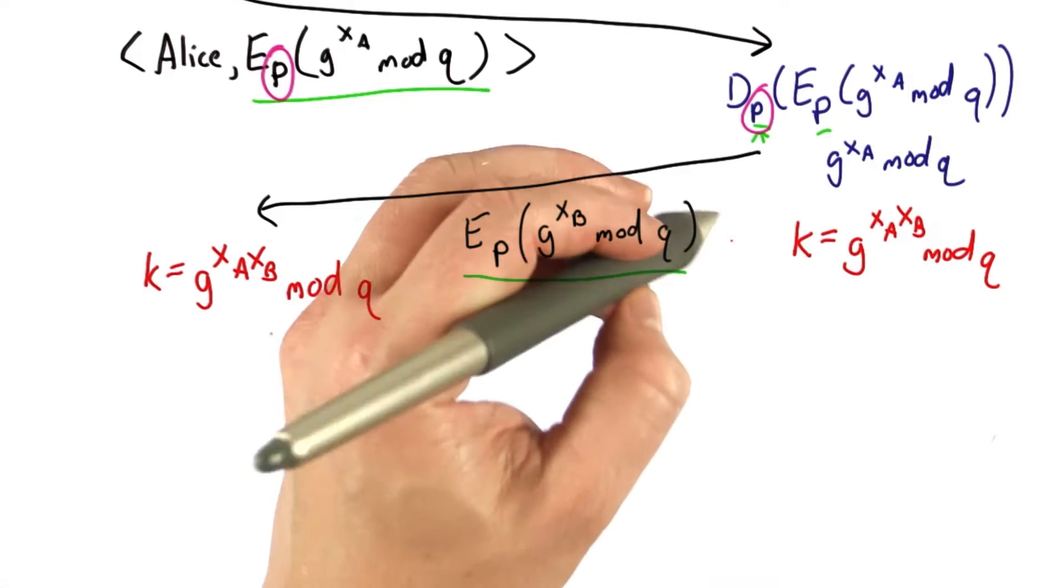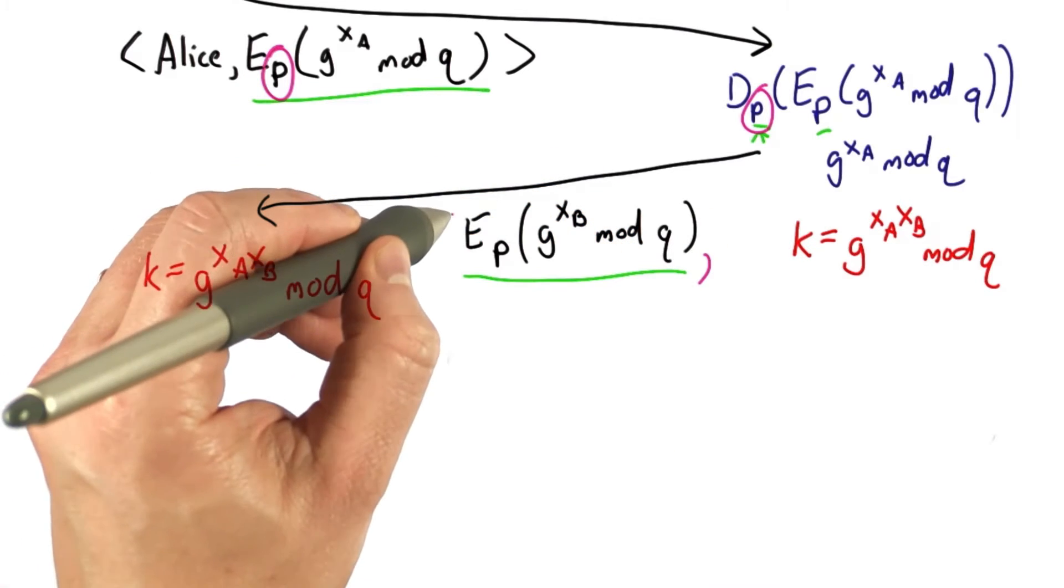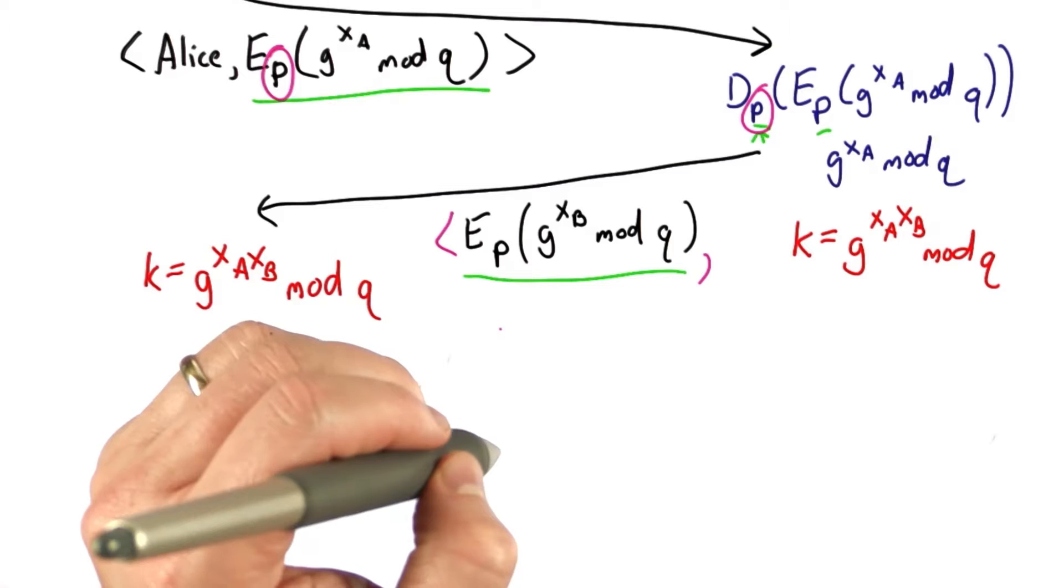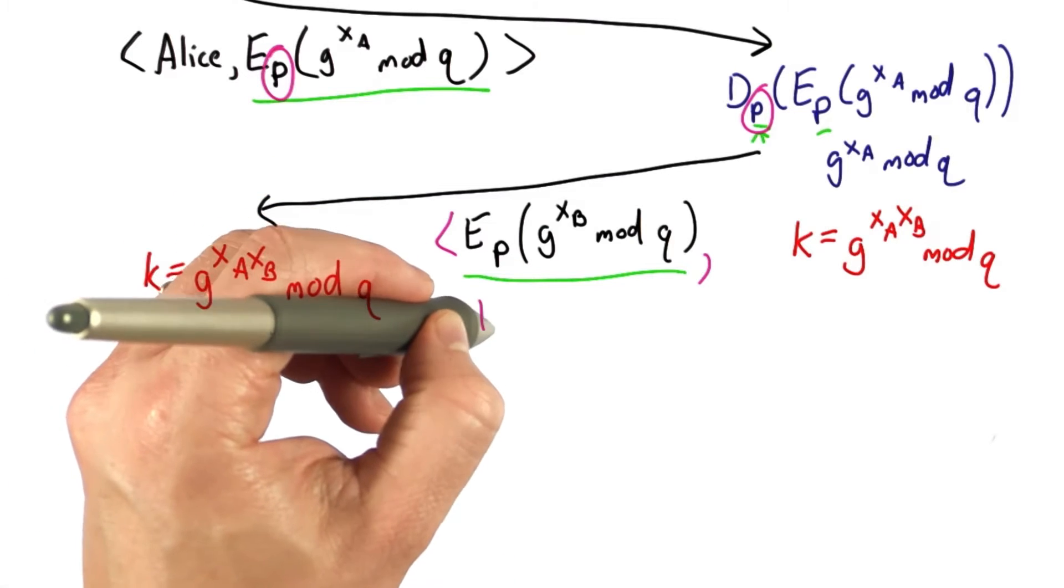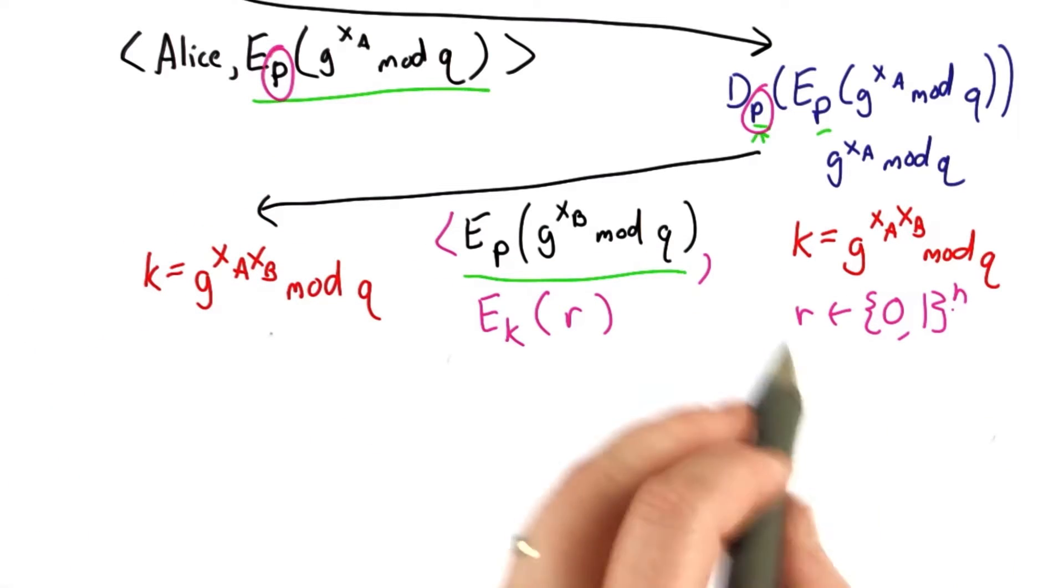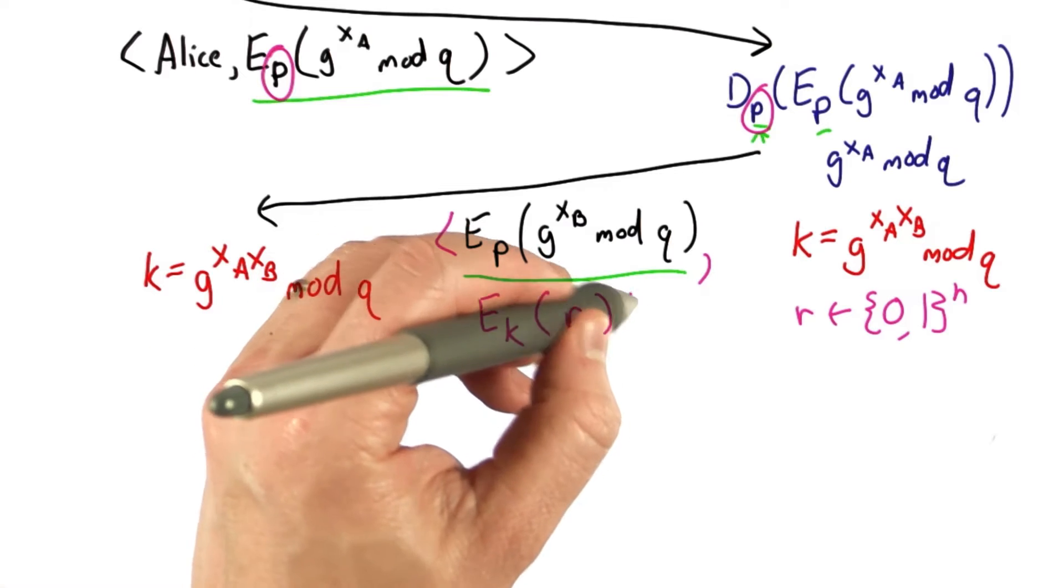And so what we're going to add to the message is instead of just sending this value, we're going to also send a challenge. And that challenge is going to be encrypted using the key. And the challenge is just some random value selected by the server.